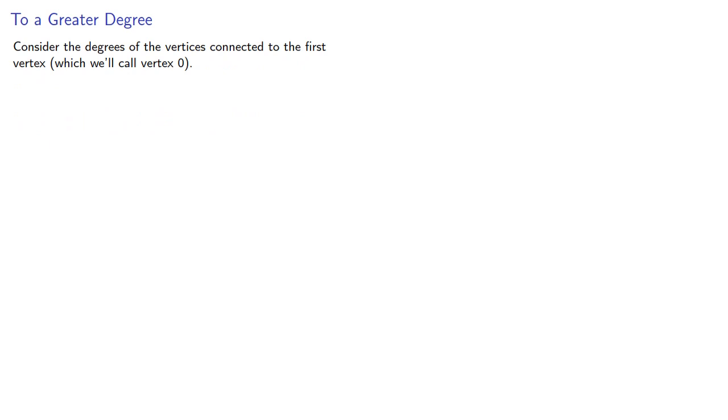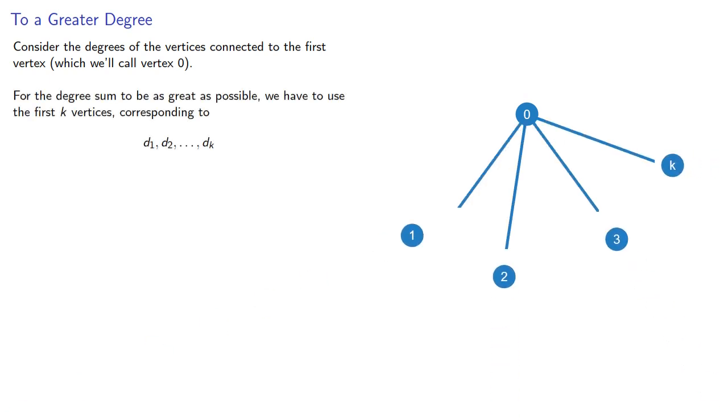So consider the degrees of the vertices connected to the first vertex, which we'll call vertex 0. For the degree sum to be as great as possible, we have to use the first k vertices, corresponding to the degrees d_1, d_2, through d_k.